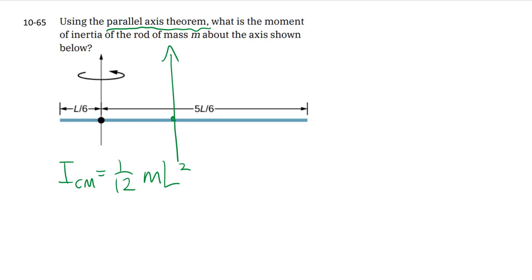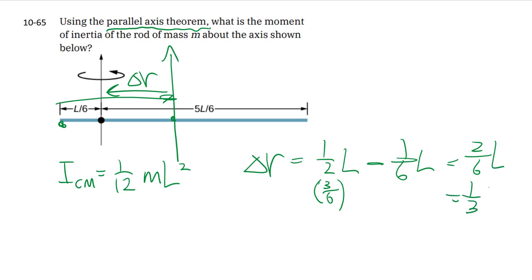To use the parallel axis theorem, we also need this delta R. And so this distance, if we measure from the end here, this is one half L subtracted one sixth L. I know you guys have all these fancy calculators to do fractional addition and subtraction, but I'm a bit more old school and I like to do the common denominator thing, which is three minus one. So that's two sixths L, which is one third L.